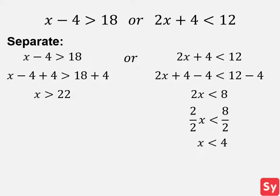Next we combine the ranges. Since the original inequality is a union of sets, our solution is x is greater than 22, or x is less than 4.